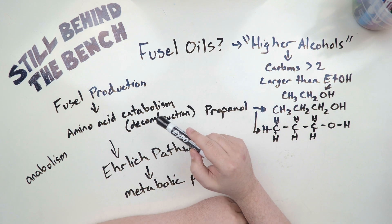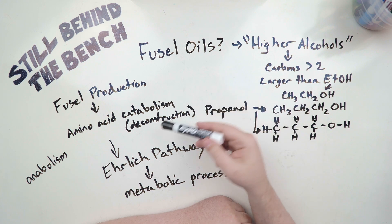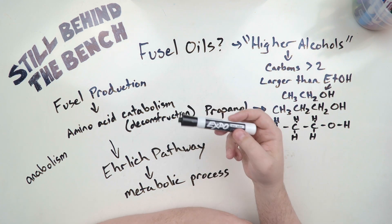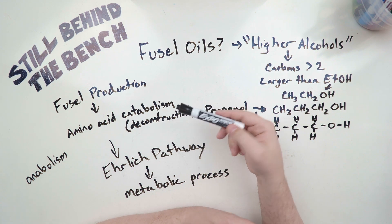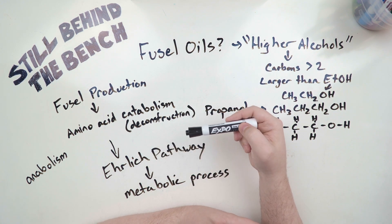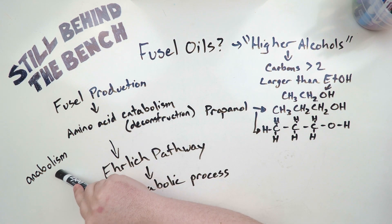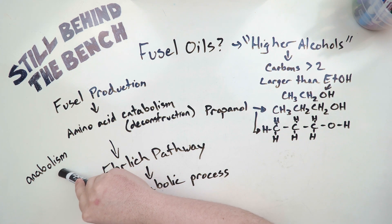Fusel production is essentially the result of catabolism of specific amino acids. So what is catabolism? Catabolism is just a deconstructive process, so you're breaking things down. In this case you're breaking down an amino acid. That's as opposed to anabolism which is the construction of things. So you may have heard of anabolic steroids - steroids help you create muscle.